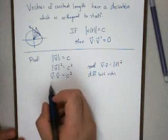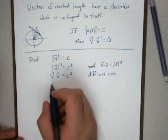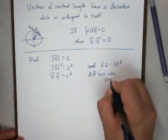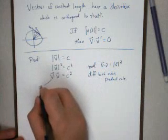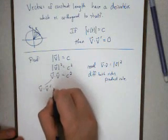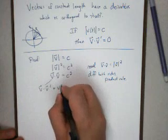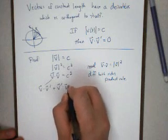Something to note about the dot product is the product rule for derivatives applies. So I can take the first times the derivative of the second plus the derivative of the first times the second.